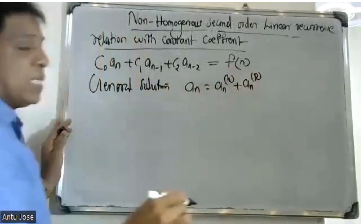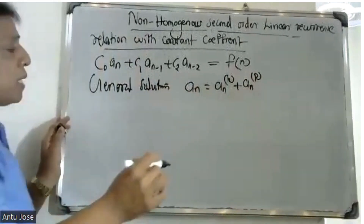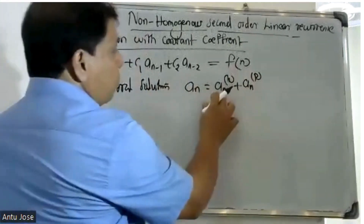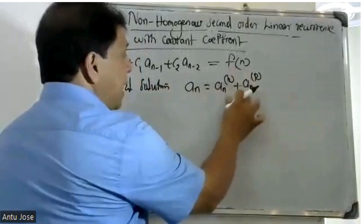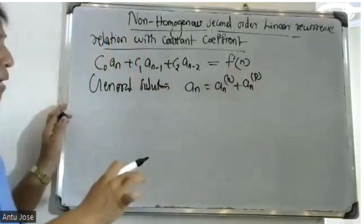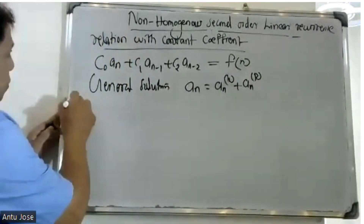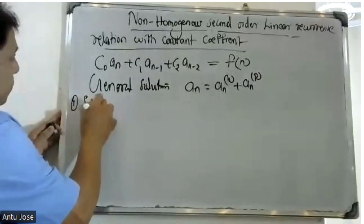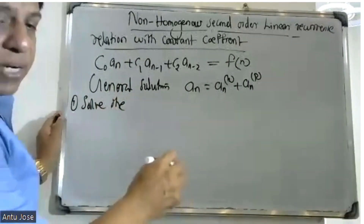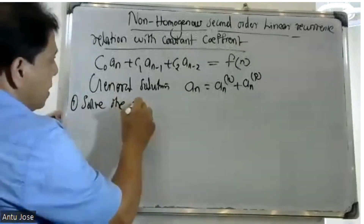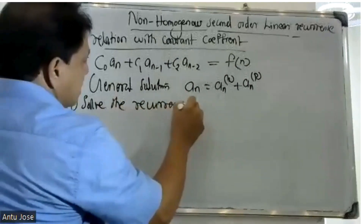Here, a_nh is the homogeneous solution and a_np is the particular solution. We need to find both parts to solve the recurrence relation.